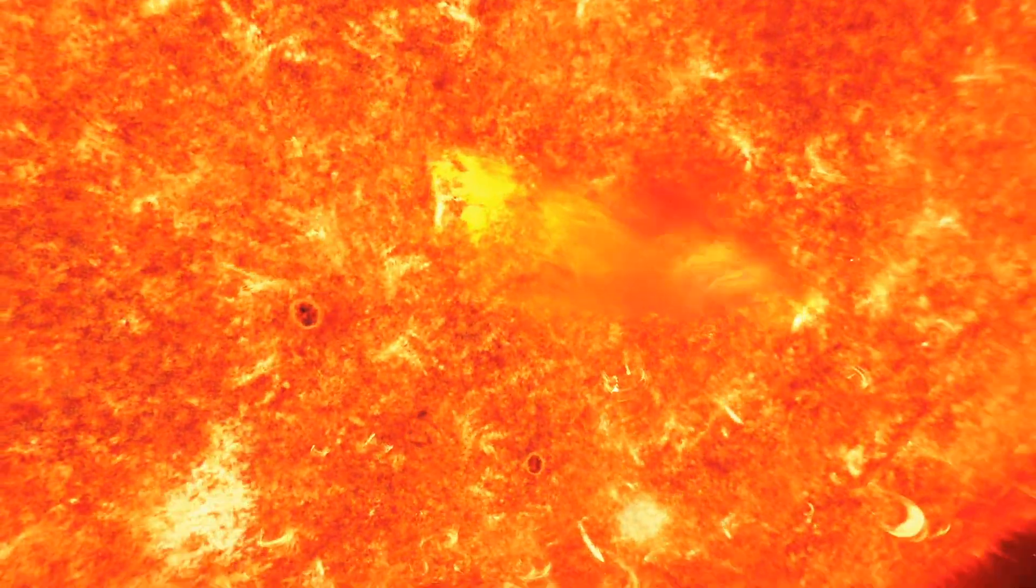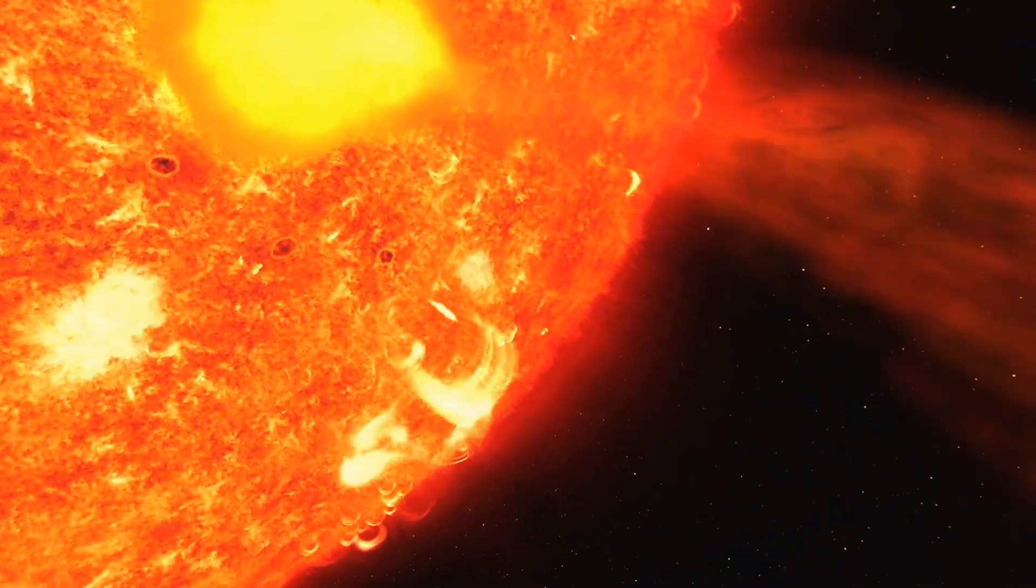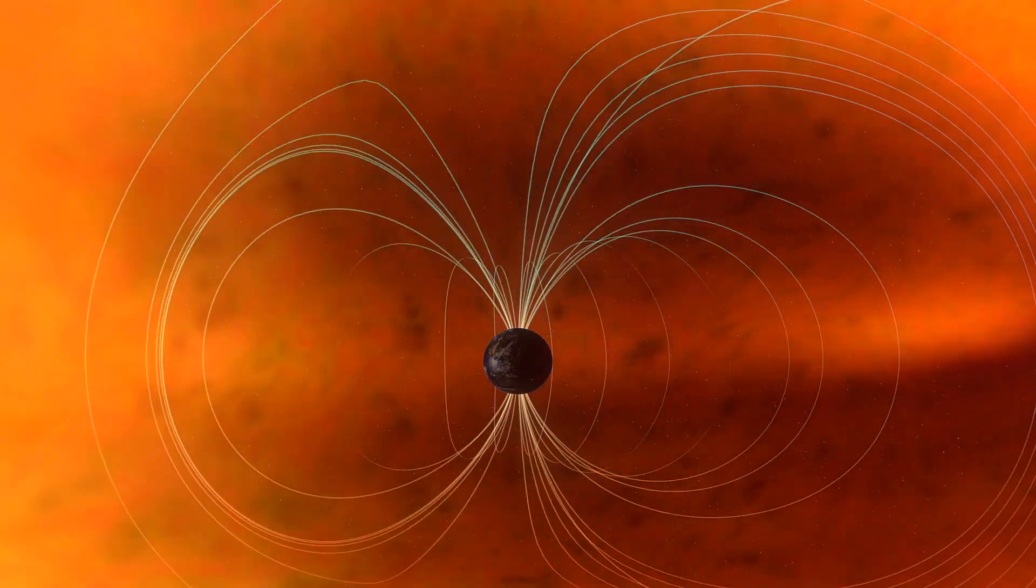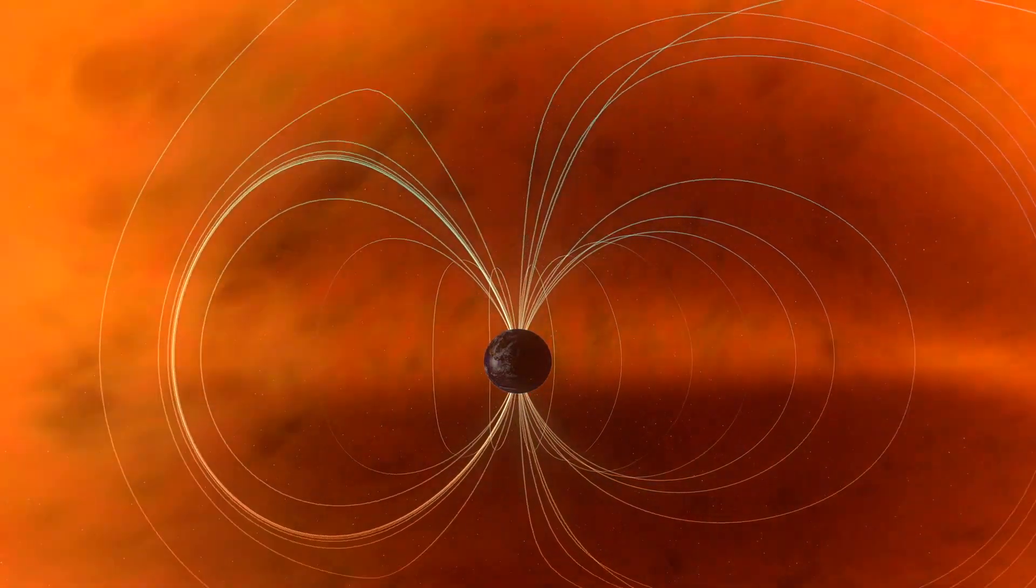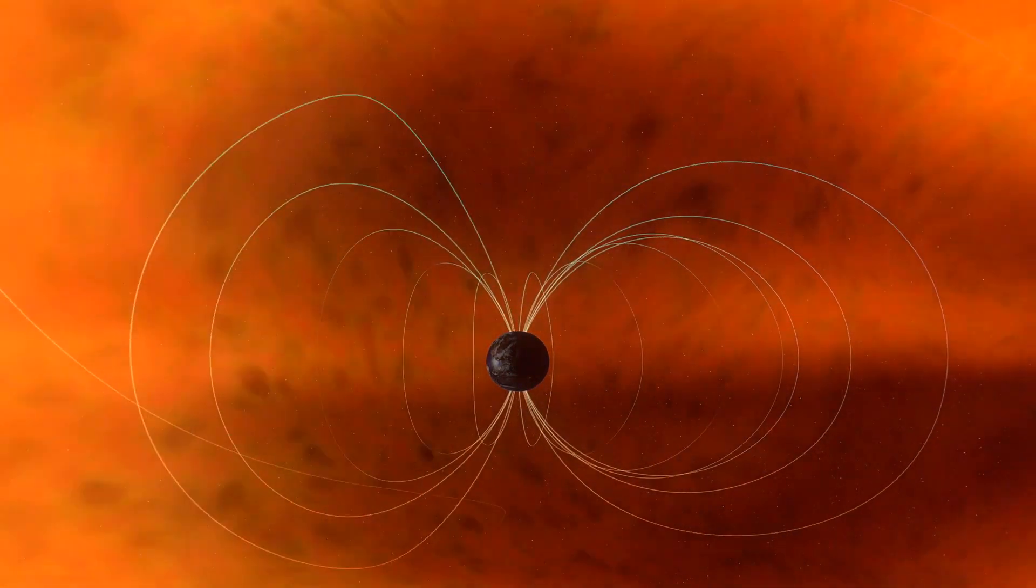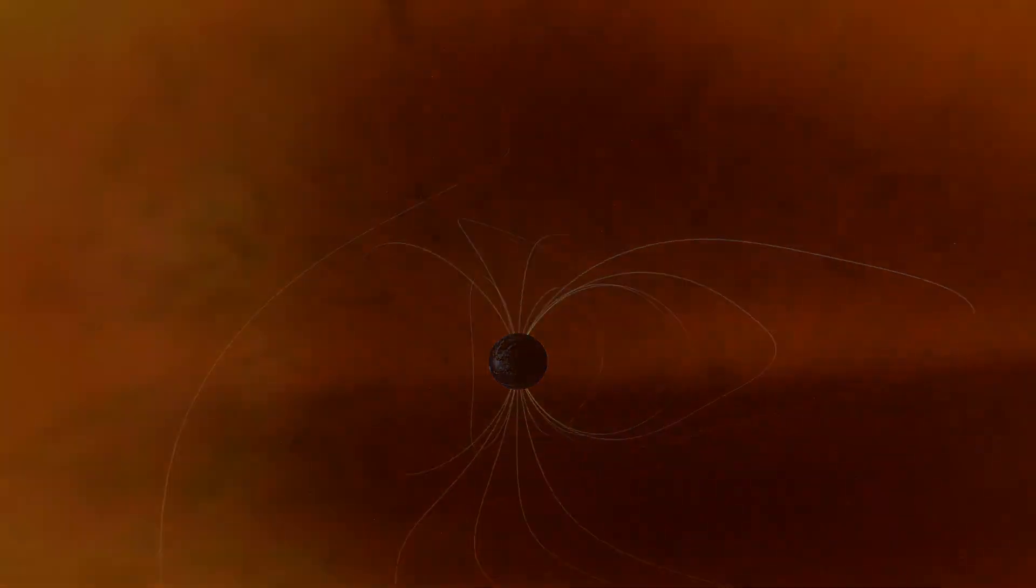If the timing is right, observers might photograph a CME during totality. Earth's magnetosphere redirects most particles and protects the surface below. Understanding this connection between the sun and Earth began with observations of the sun's upper atmosphere during total solar eclipses.